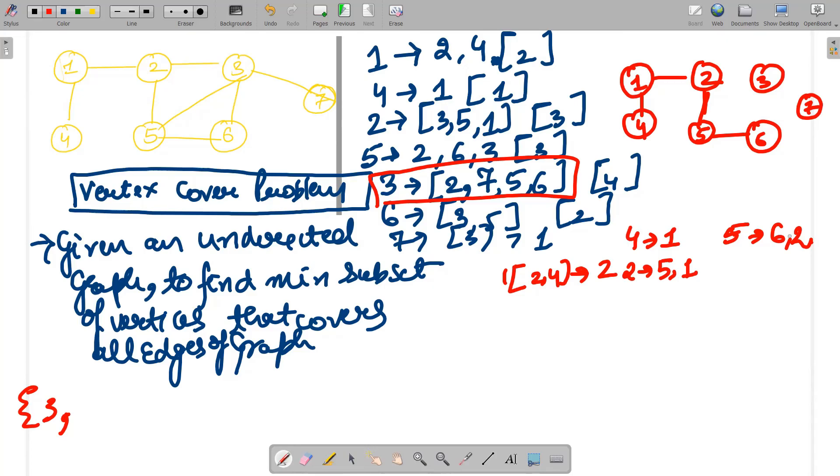Let's say if we take 1, if we take 1, so we'll remove all the edges of 1. So we'll have 1, we have 2, we have got 5, we have got 6, we have got 3, we have got 7.